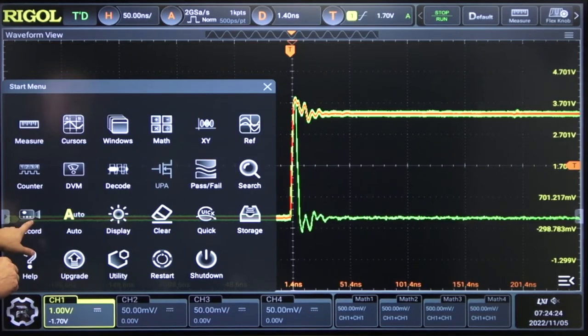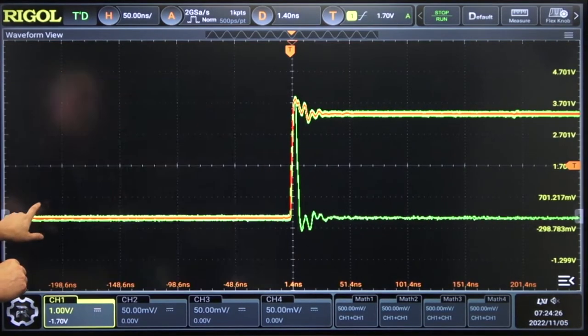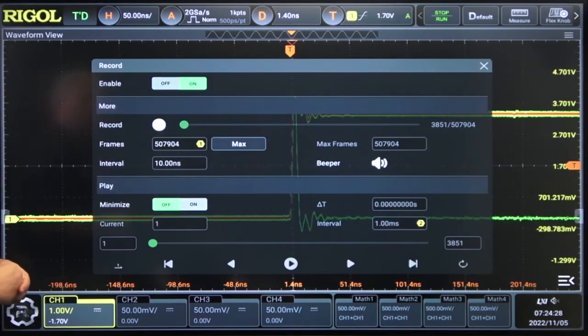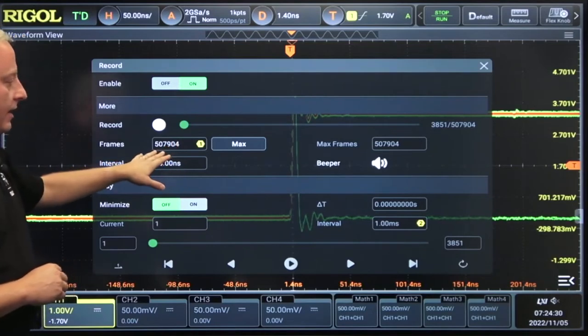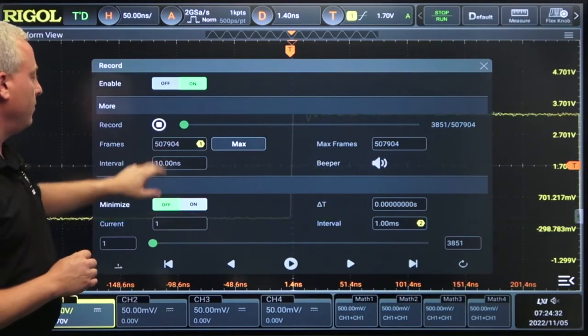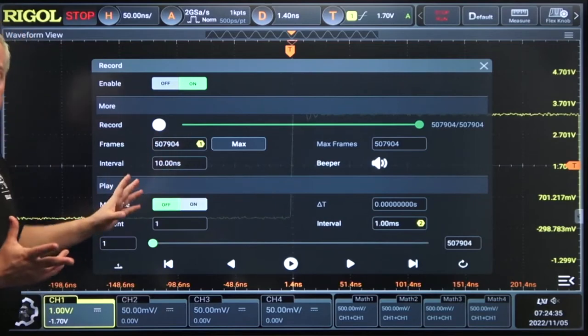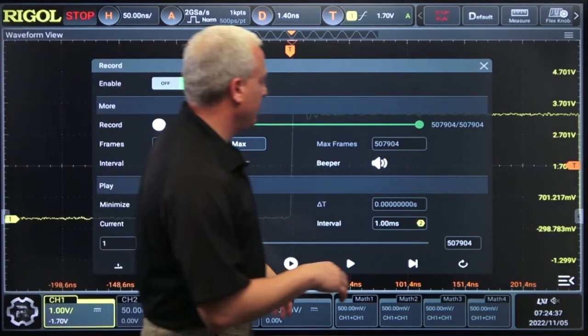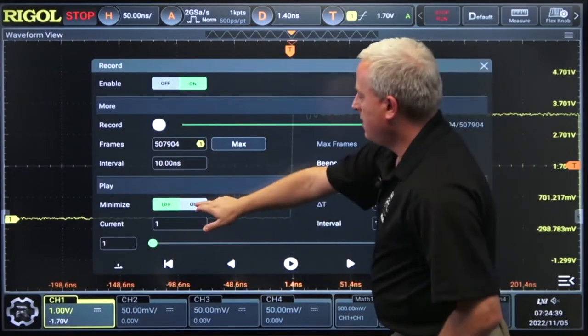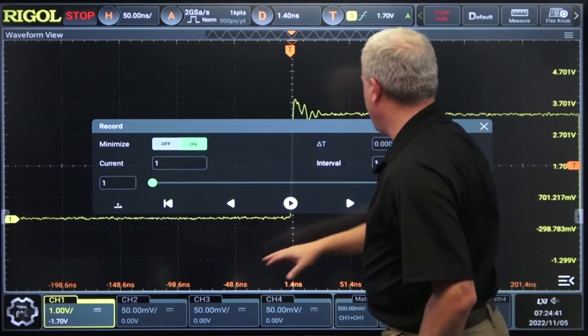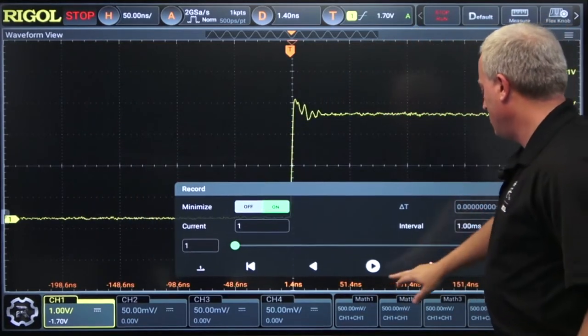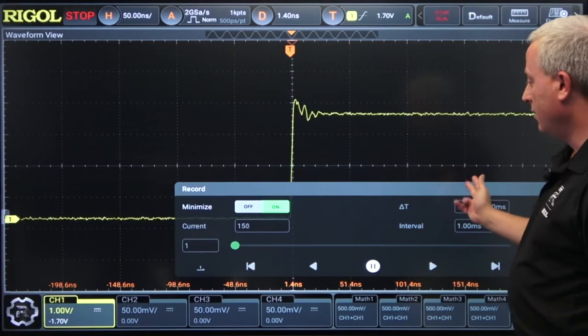Now let's go into the record mode. Now we can record 500,000 frames of this data. Let's go ahead and do that. So quickly captured half a million frames trigger events on this data. We minimize that. Go ahead and we can play it back as a movie.